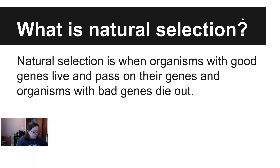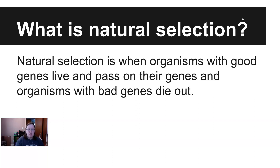Natural selection is when organisms with the best or most adaptable genes for their environment survive, pass on their genes. Organisms that have negative genes — ones that aren't suited to their environment — are the ones more likely to get eaten and eventually die out.